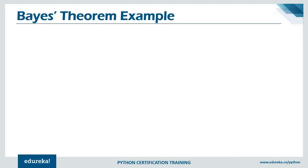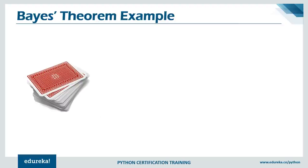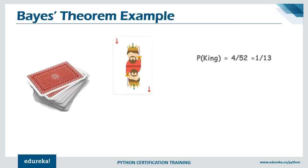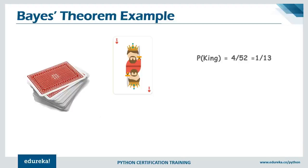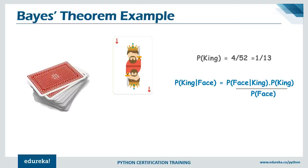Let's take an example to understand this theorem. Suppose we have a deck of cards and a single card is drawn. The probability that the card is a king is 4/52, since there are four kings in a standard deck of 52 cards. So the probability of king is 4/52 = 1/13. Now if evidence is provided — for instance, someone indicates the card is a face card — the probability of king given that it's a face card can be calculated using Bayes' Theorem. Since every king is also a face card, the probability of face given king equals 1.